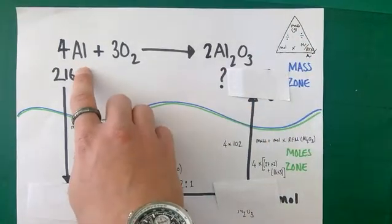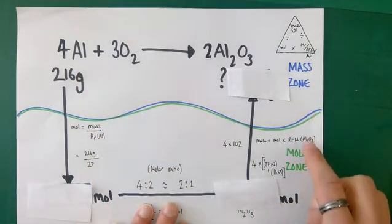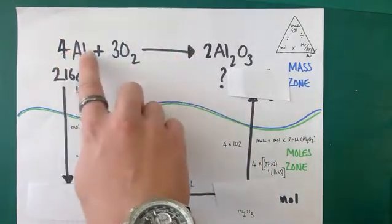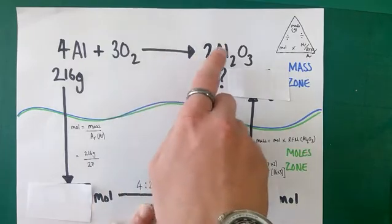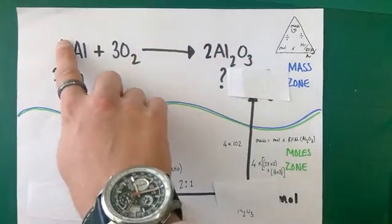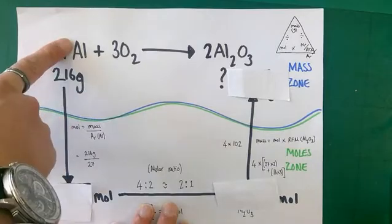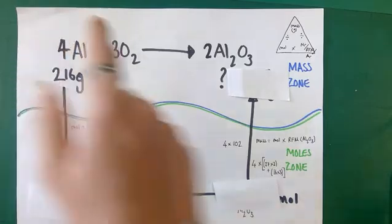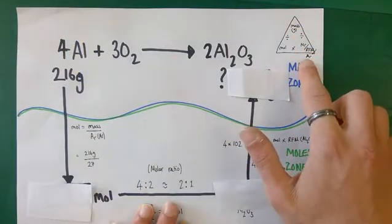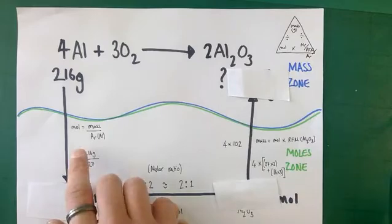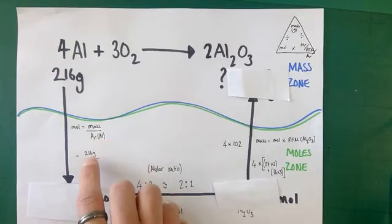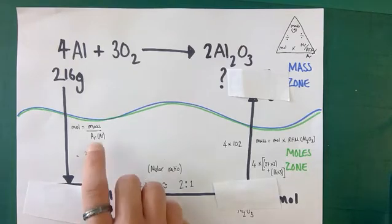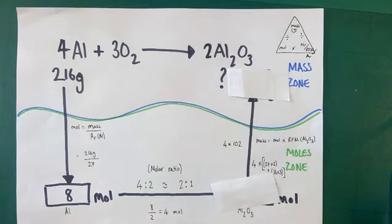I'm going from the mass zone to the mole zone. Because I'm not in the mole zone yet, I can ignore the integers in front of the substances — I'm only looking at what the substance is and what the mass is. I have 216 grams of aluminium, so moles equals mass divided by the relative atomic mass: 216 divided by 27 gives us 8 moles of aluminium.